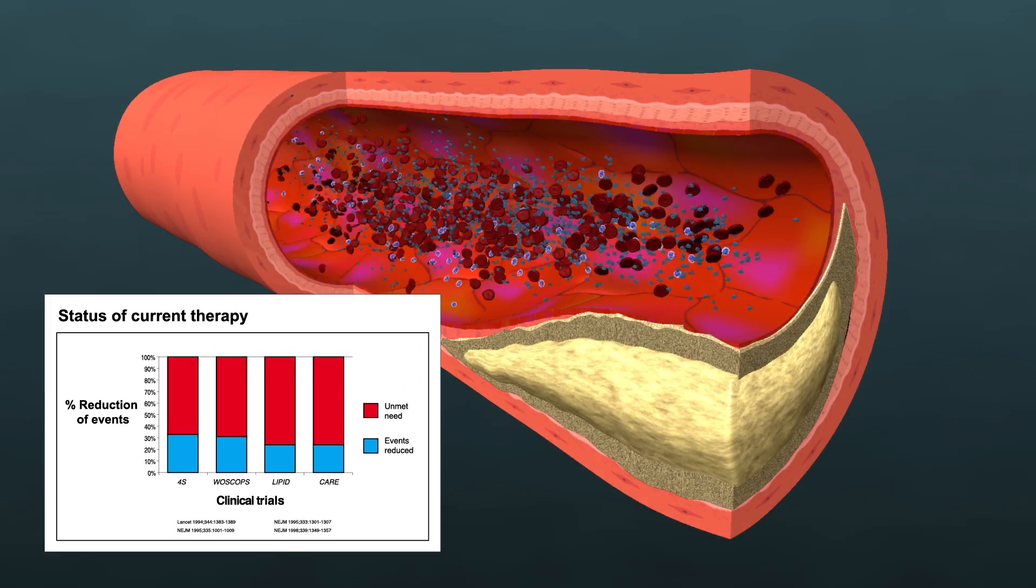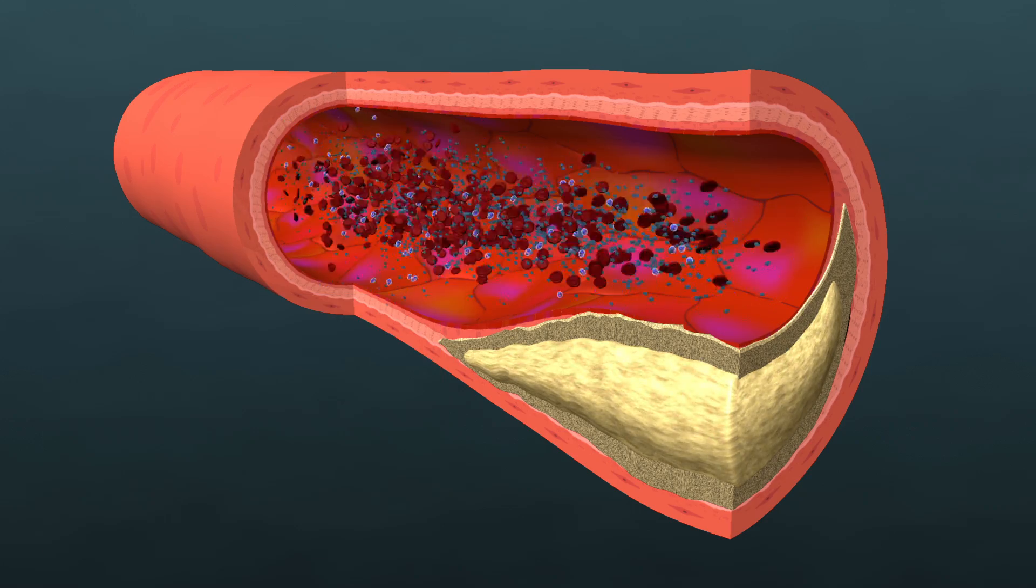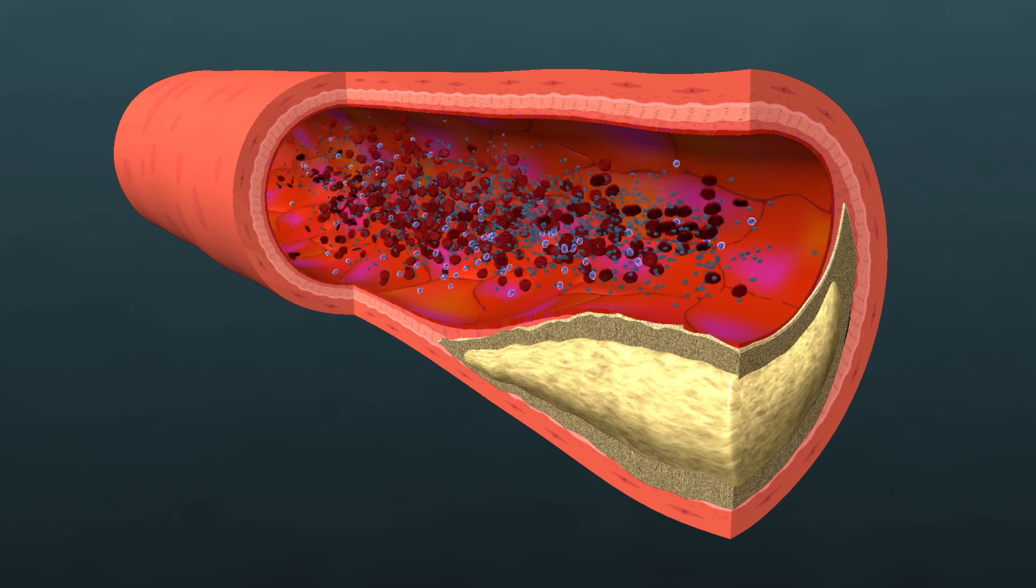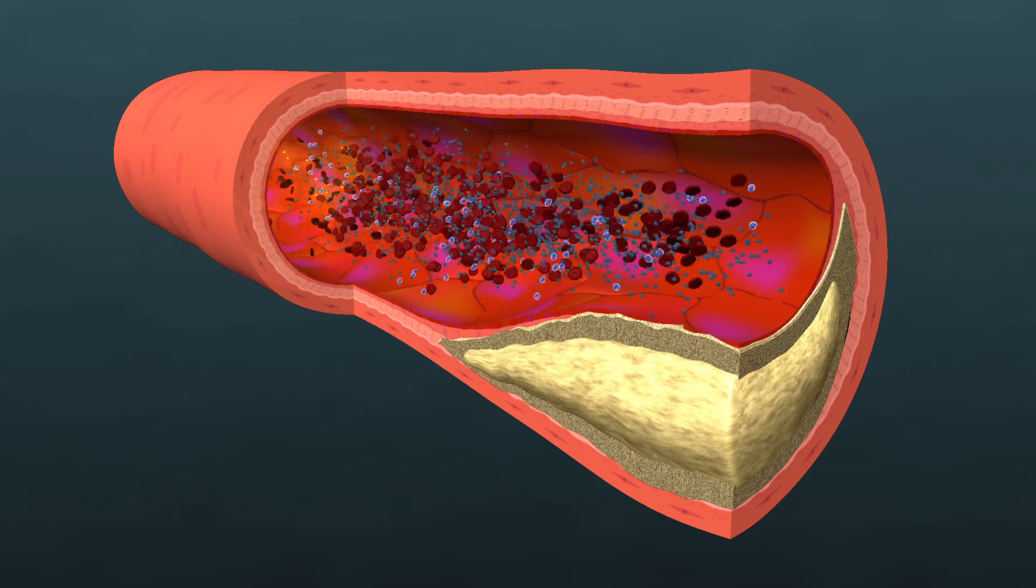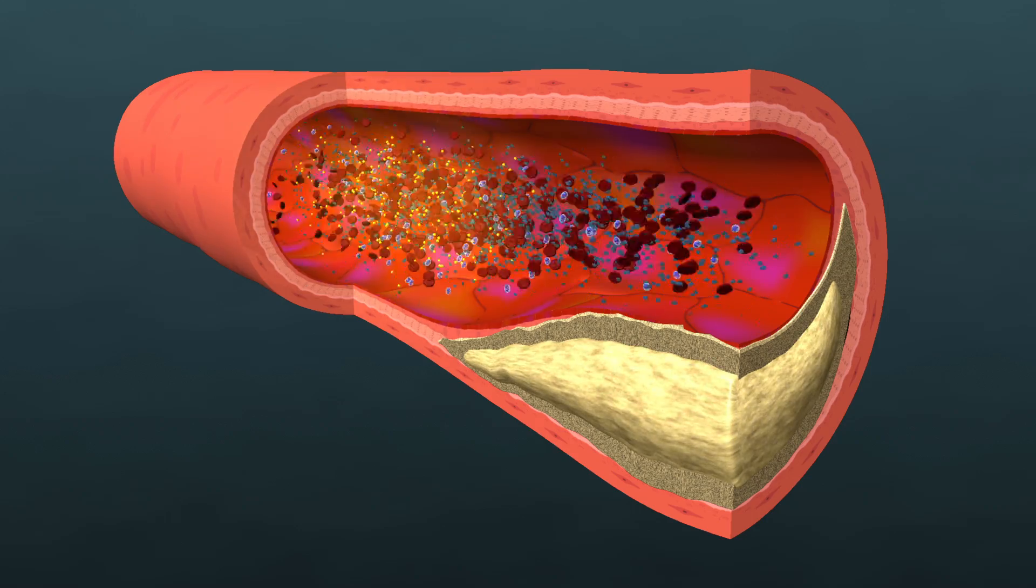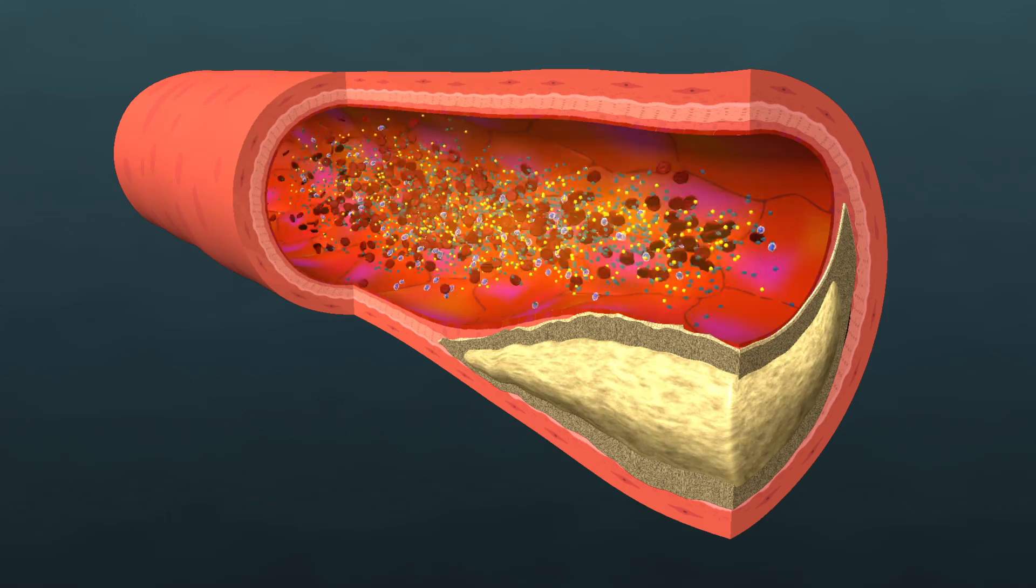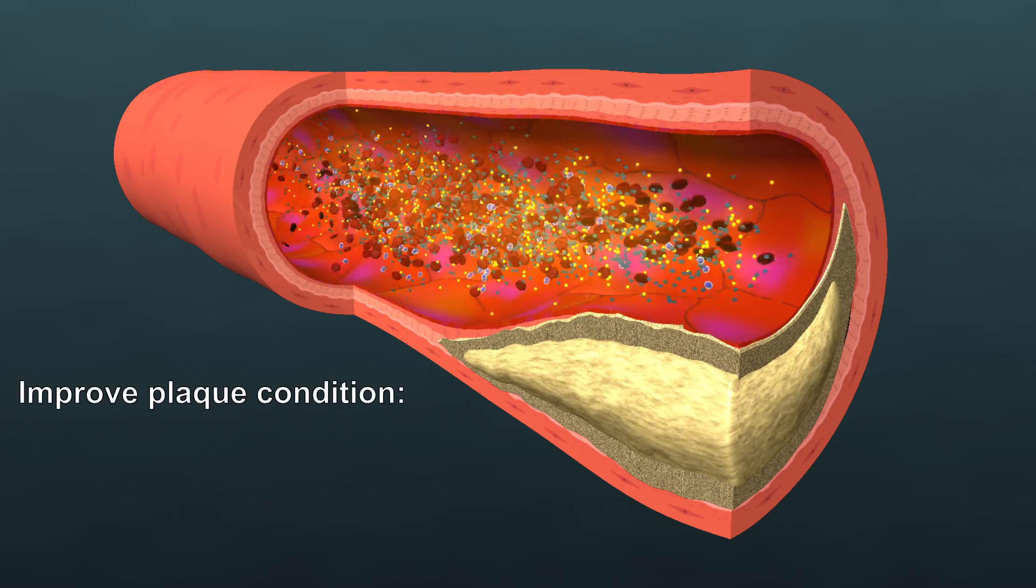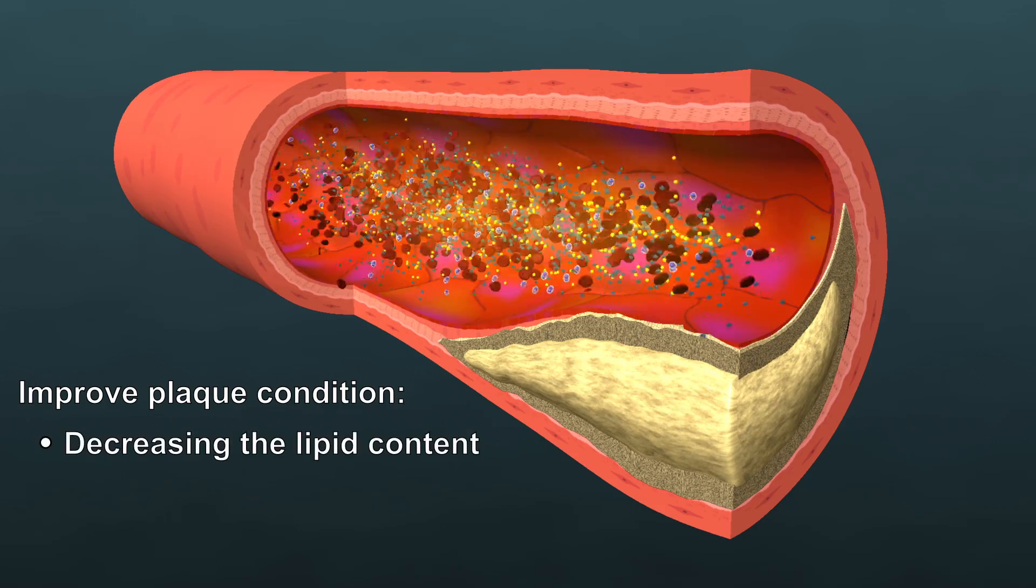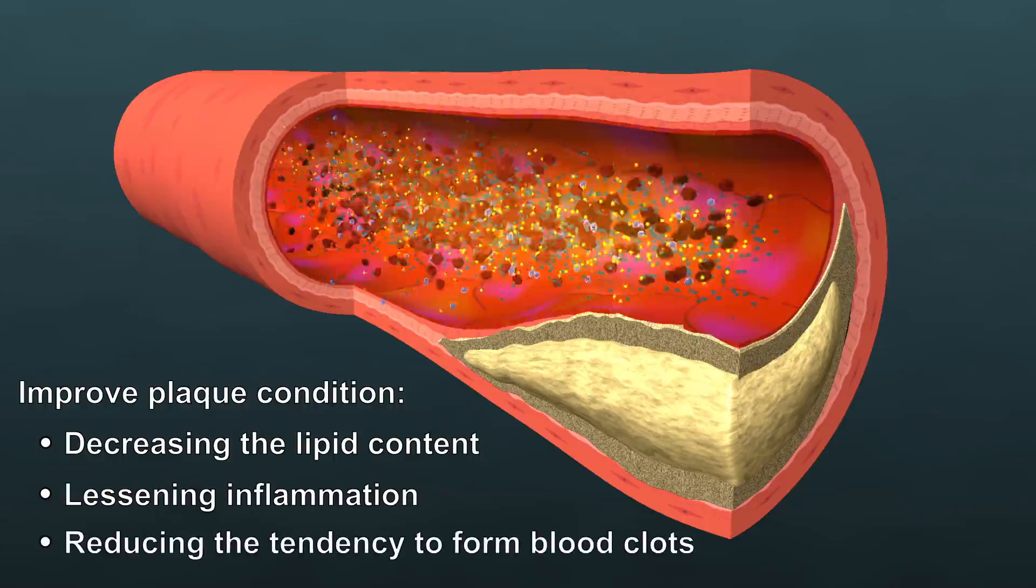To augment the benefits of statins, it has been proposed that diseased arteries can be treated directly, with drugs delivered locally to the vulnerable plaques, thereby stabilizing them and preventing rupture. The idea is to improve the plaque condition by decreasing the lipid content, lessening inflammation, and reducing the tendency to form blood clots.